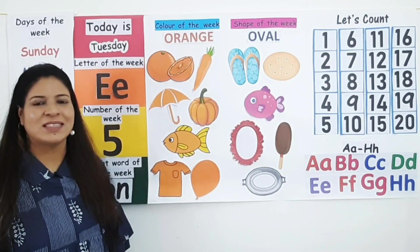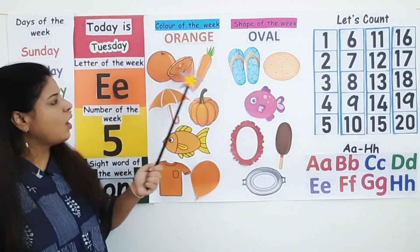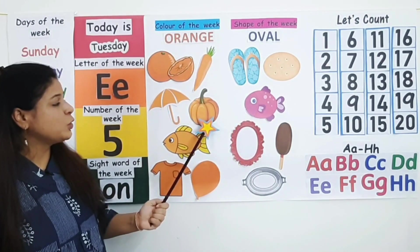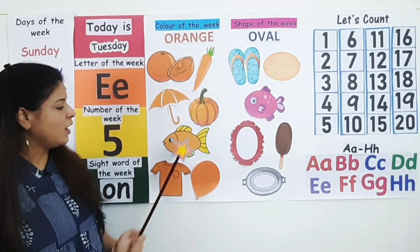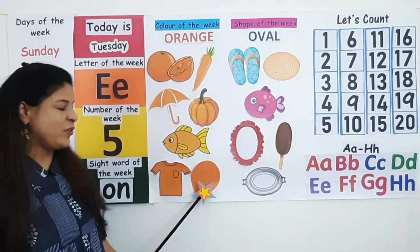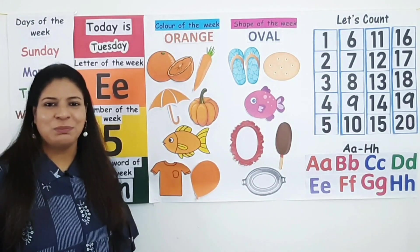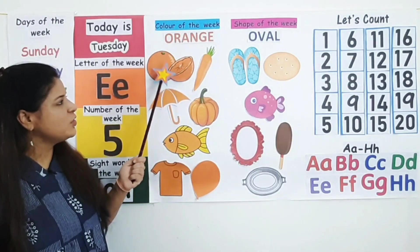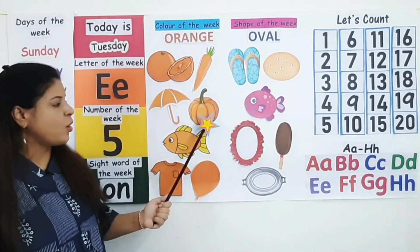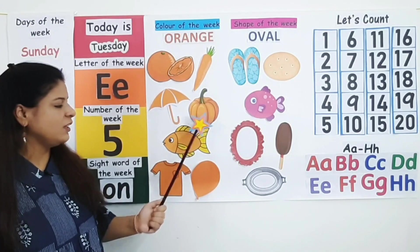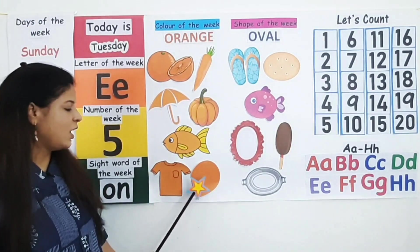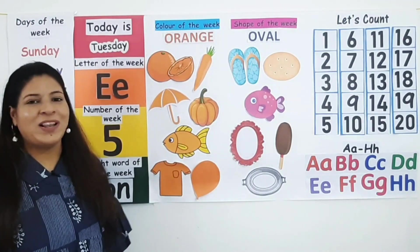Now let's see the pictures. Orange colored orange, orange carrot, orange umbrella, orange pumpkin, orange fish, orange t-shirt, orange balloon. Now say along with me — orange colored orange, orange carrot, orange umbrella, orange pumpkin, orange fish, orange t-shirt, orange balloon. Well done.